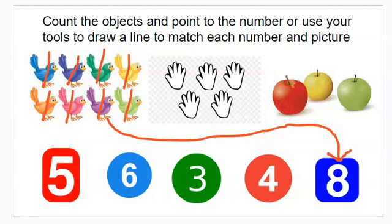We're going to go ahead and count the hands together. Let's count one, two, three, four, five. And let's go ahead and find that number five. It is right there, number five.